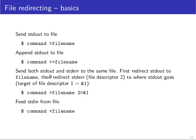If you want to send both standard output and standard error to the same file — for example to see what went wrong — you first redirect standard output to the file, then use the greater-than ampersand notation to redirect standard error. This notation says that file descriptor 2 (standard error) is redirected to wherever file descriptor 1 is already being written. To feed standard input from a file, use the less-than sign instead.